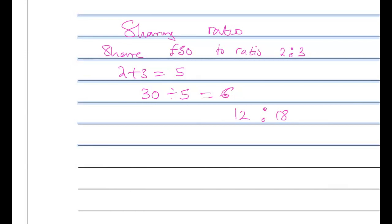A student asks for clarification. The first thing you have to do is add the ratios together — what is two plus three? Five. You now use the total amount you want to share and divide it by five: 30 divided by five. The number you're sharing is 30 pounds. Then you divide by five to get six, and use that six to multiply the ratios. That's all.